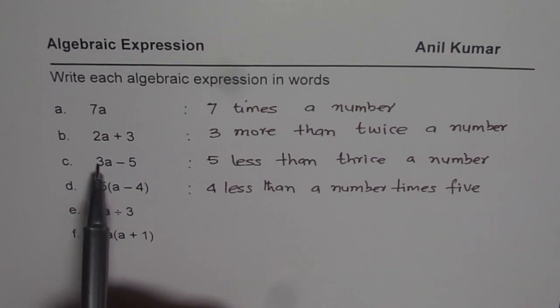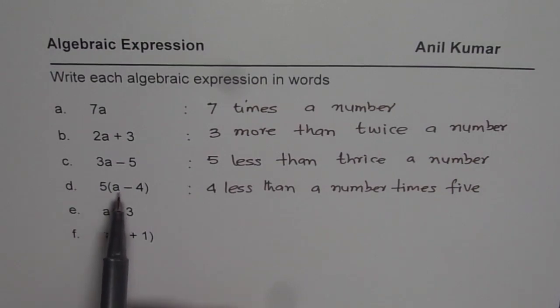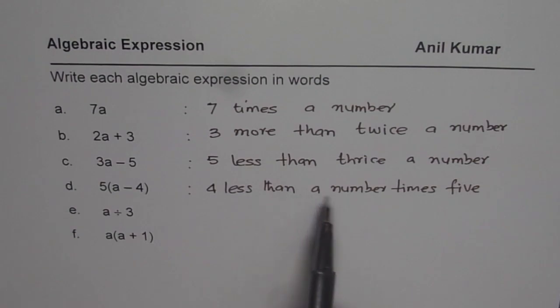You could have written for 3a, 3 times a number take away 5. Now in this case, remember, we have a minus 4 in the bracket, so 4 less than a number times 5, do you understand? So that is critical to understand.